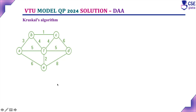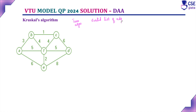Now for this given graph we are going to implement Kruskal's algorithm. For that, first we need to consider the edges and create a sorted list of edges. The first step is to sort the edges in ascending order of weights.